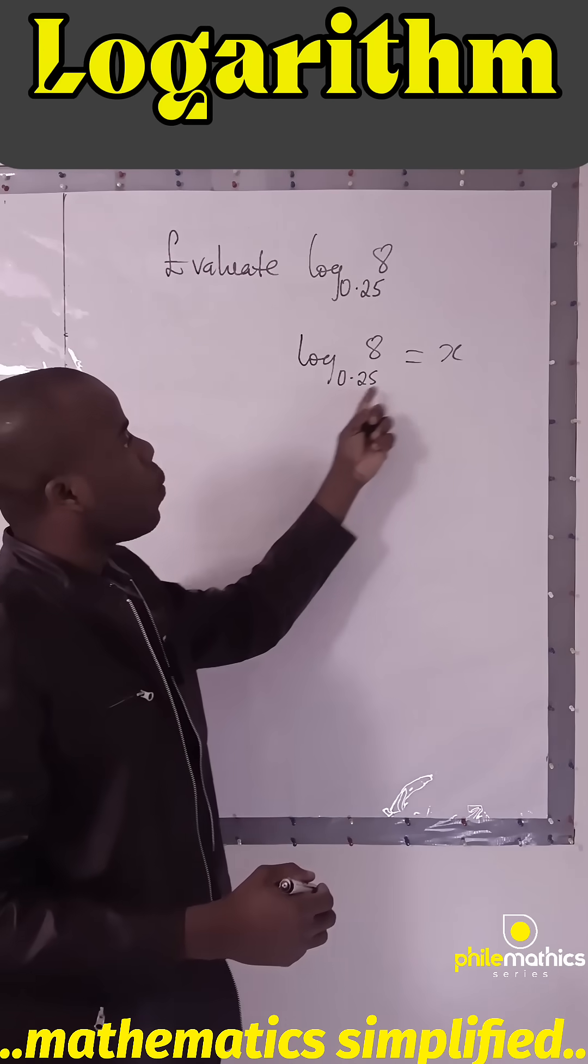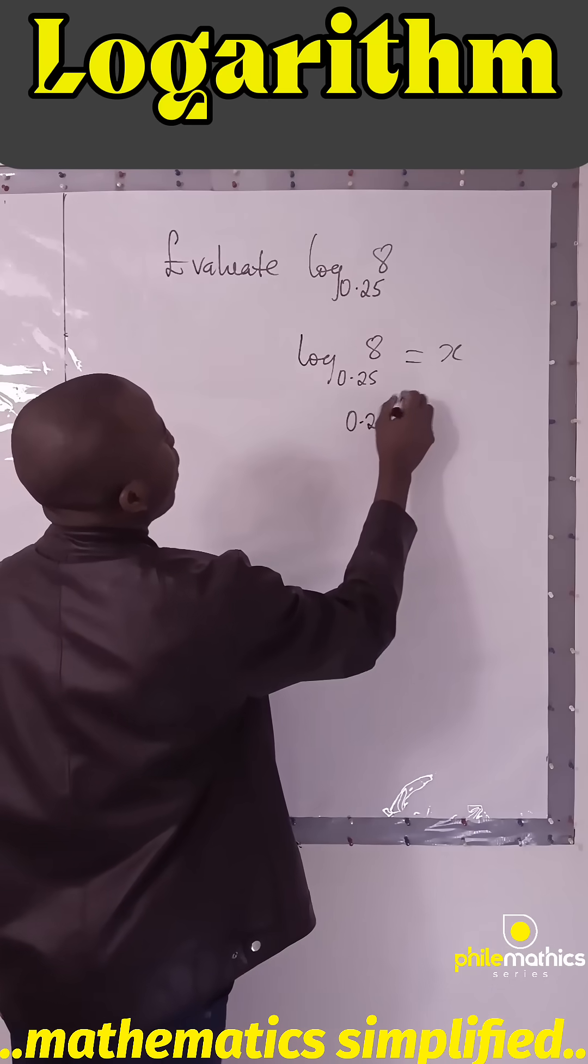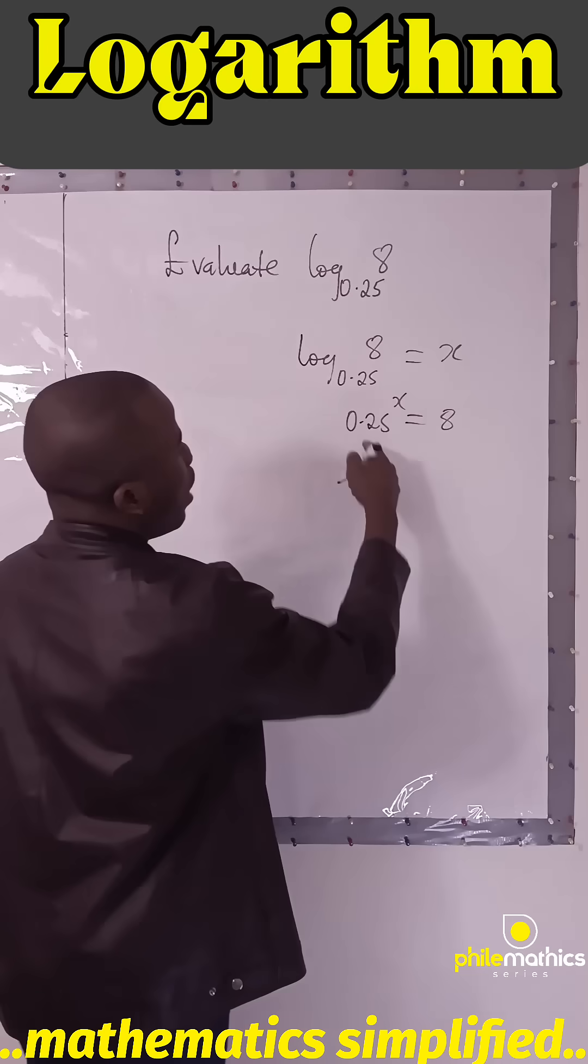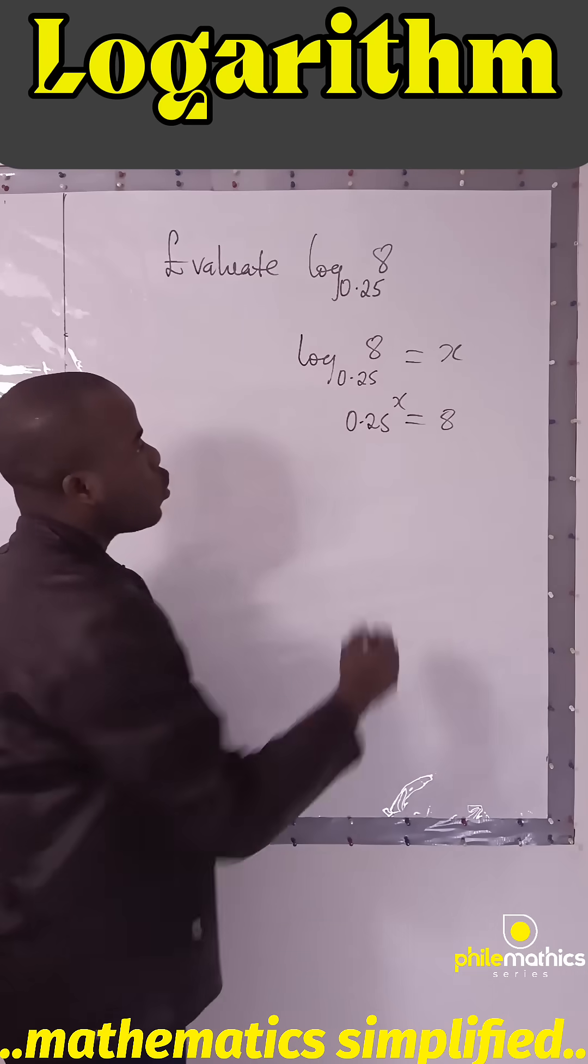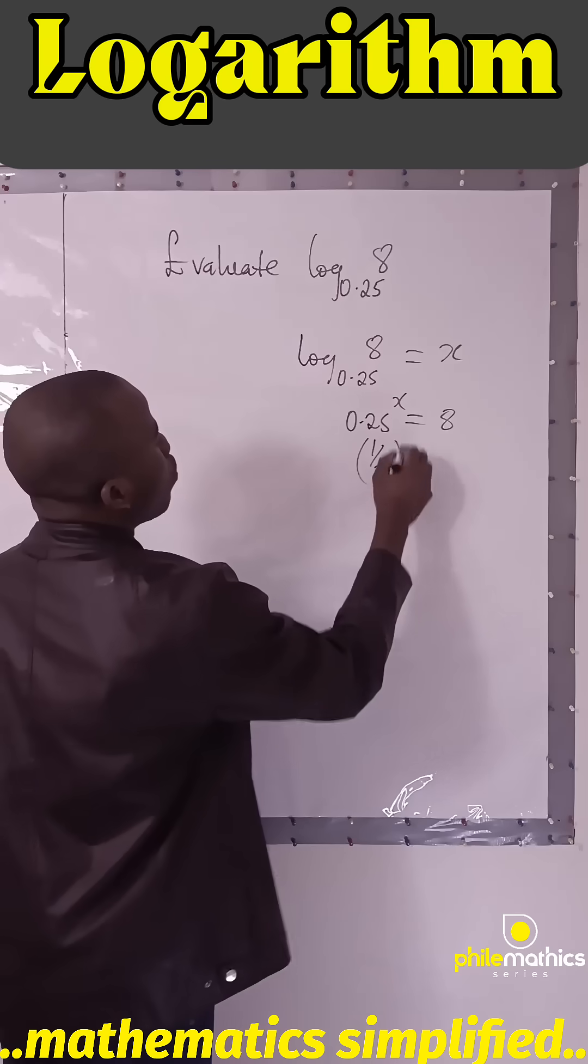say this to power this equals it, so 0.25 to power x has to give me 8. And 0.25 in fraction is 1 over 4, so this is 1 over 4, which is 2 to power -2. So (2^-2)^x equals 2 to power 3.